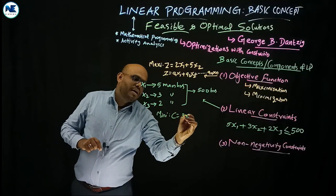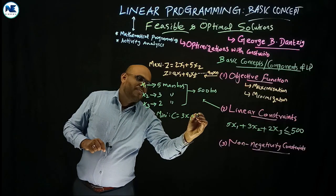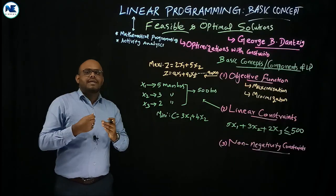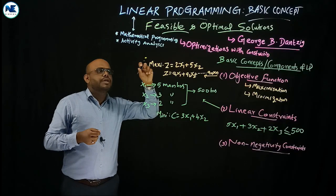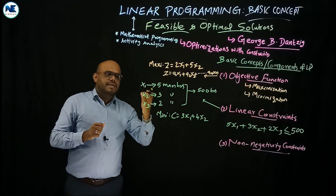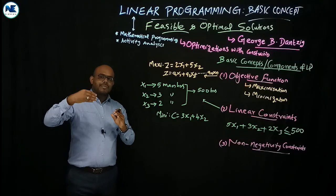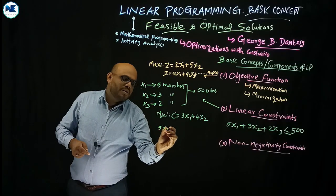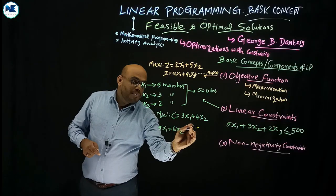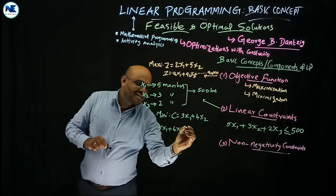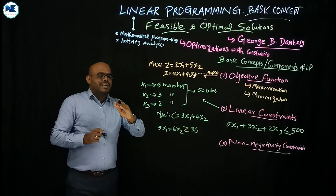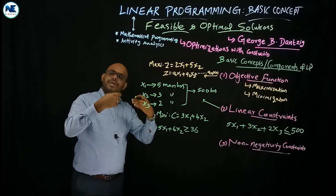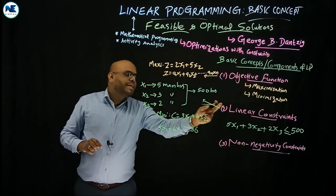For a minimization example: the objective function is C = 3x1 + 4x2 (cost minimization). The linear constraints are set accordingly — for example, 5x1 + 6x2 ≥ 36, meaning the minimum vitamin intake recommended by a diet expert must be at least 36. For minimization problems, the constraint uses a greater-than-or-equal sign.